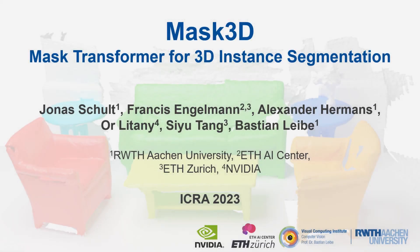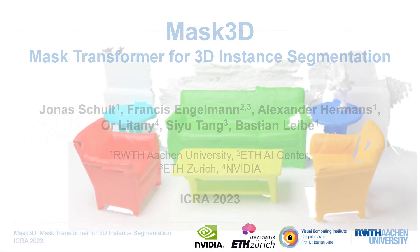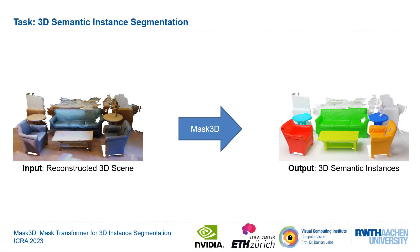We present a novel transformer-based approach for 3D semantic instance segmentation on point clouds. Given a 3D scene, our approach called Mask3D predicts accurate 3D semantic instances.